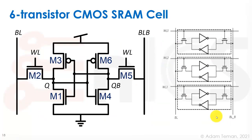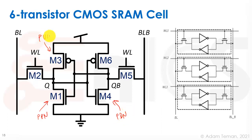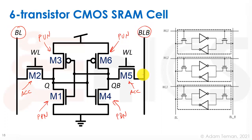Looking at the full 6T SRAM cell with a numbering scheme: the left inverter is M1 (pull-up PMOS) and M3 (pull-down NMOS), with access transistor M2. The right inverter is M4 (pull-up PMOS) and M6 (pull-down NMOS), with access transistor M5. The left side connects to the bit line (Q node) and the right side to the bit line bar (QB node). If Q=0 and QB=VDD, we call it a 0; if Q=VDD and QB=0, we call it a 1.